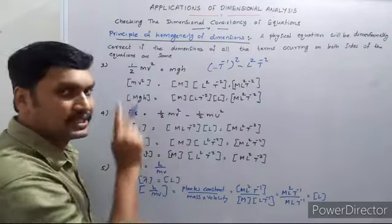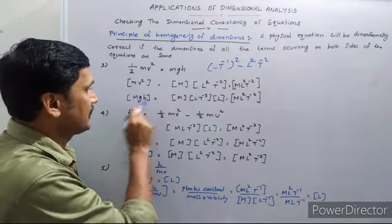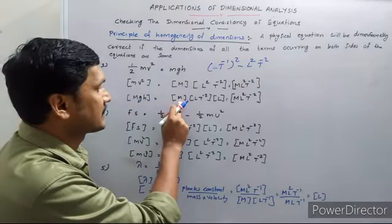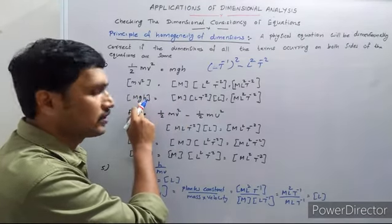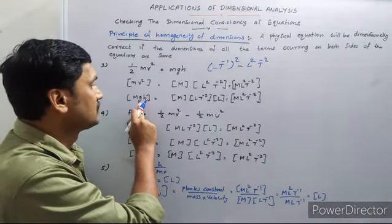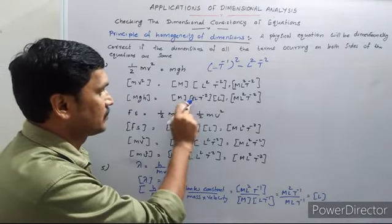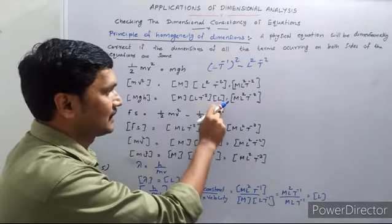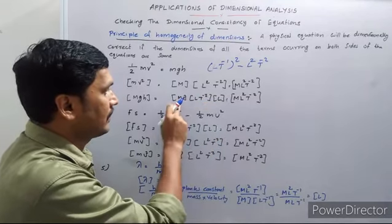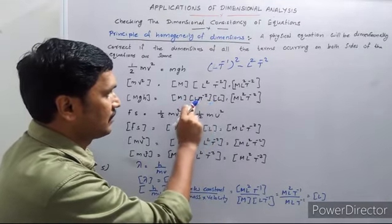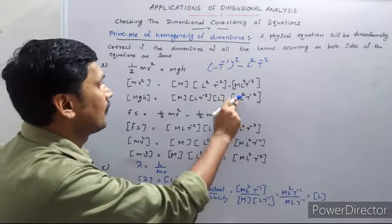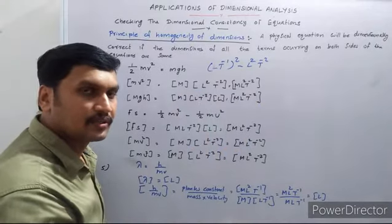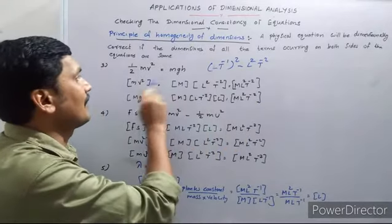On the right side we have the term mgh. The dimension of m is M, the dimension of g is L·T⁻² (acceleration due to gravity), and h is height with dimension L. So multiplying: M into L·T⁻² into L gives M·L²·T⁻². The left-hand side and right-hand side both have dimension M·L²·T⁻², so this equation is also dimensionally correct.